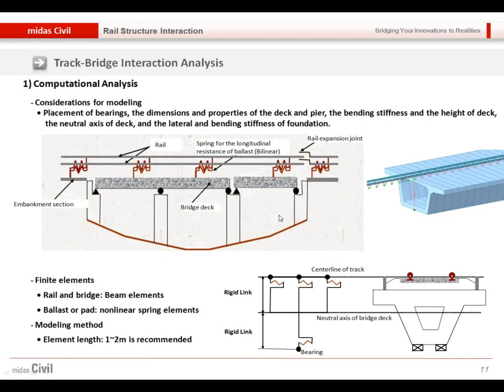For the pier and abutment, we can model them with the beam elements or we can simply model them using the point spring support. Both are available using the rail track wizard.